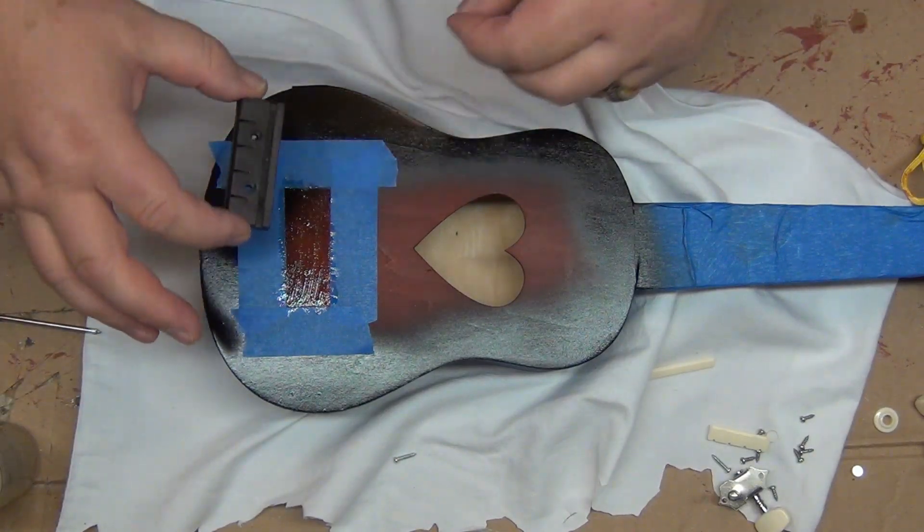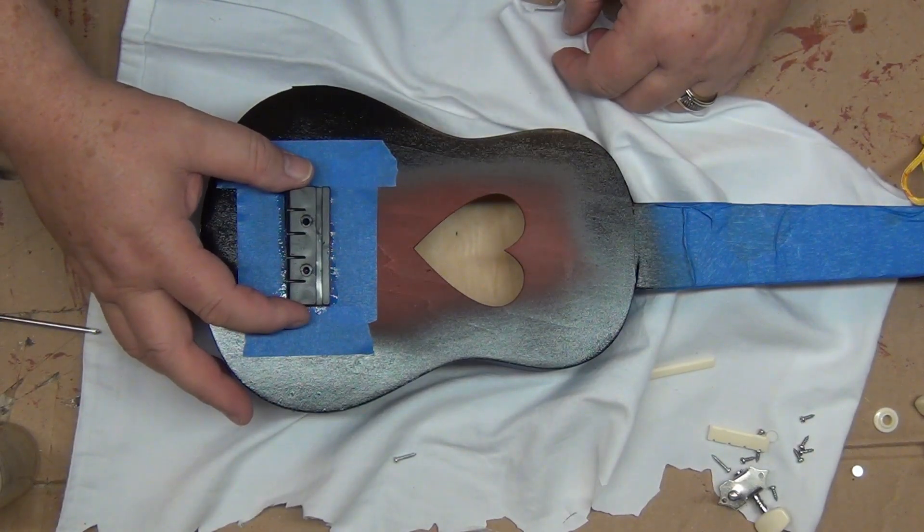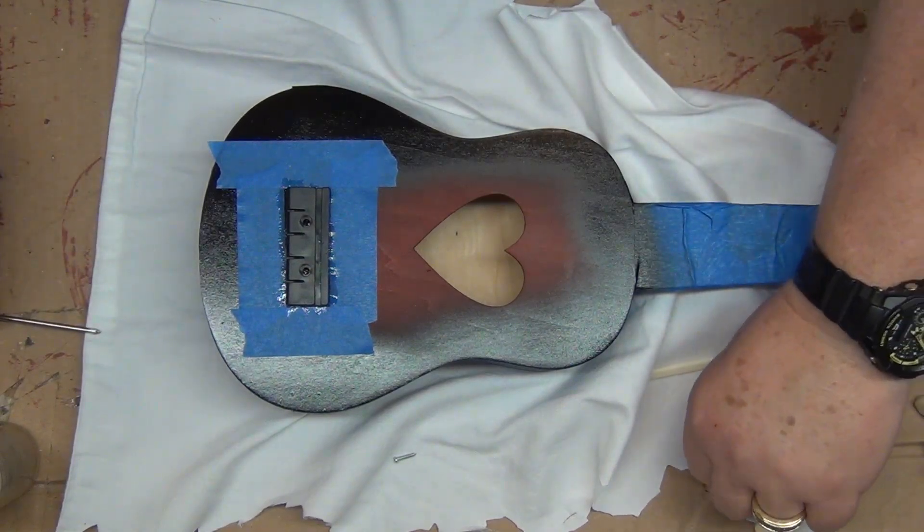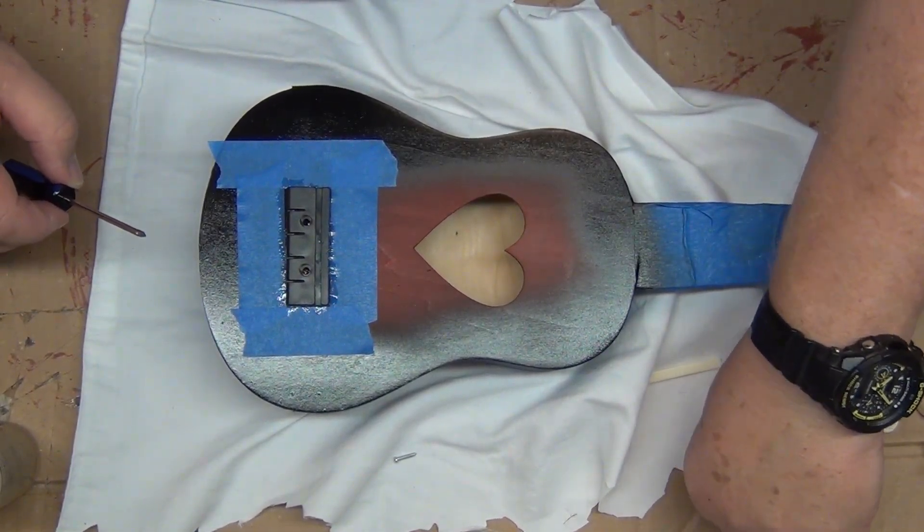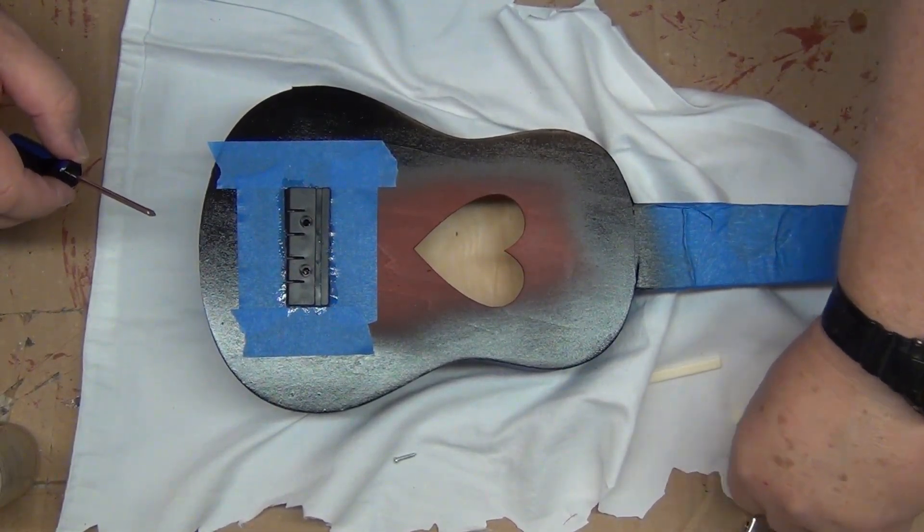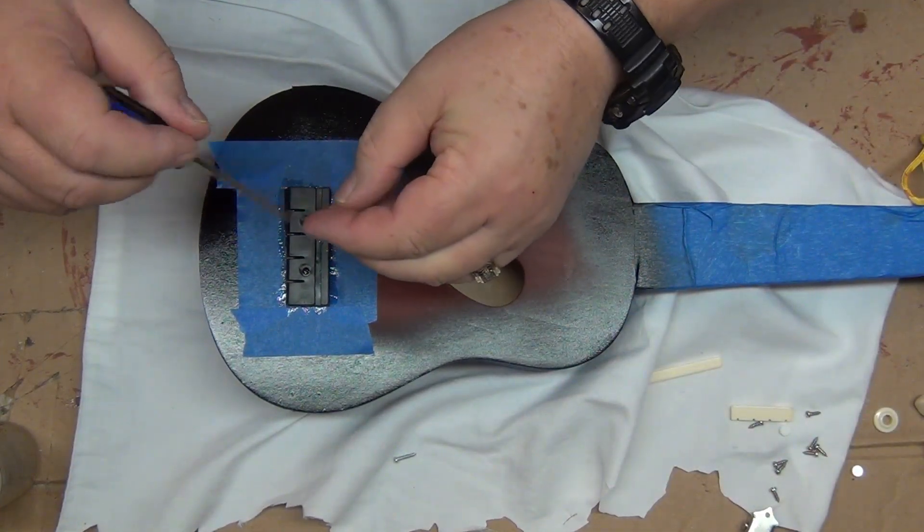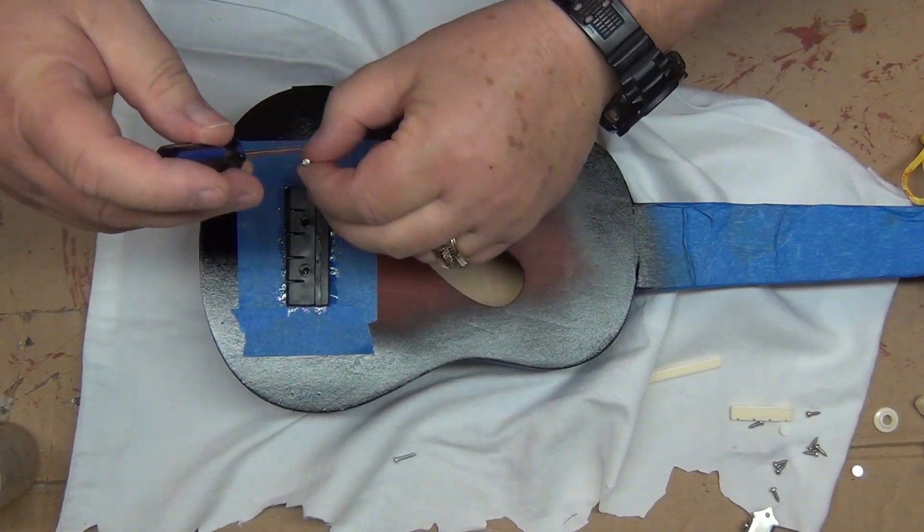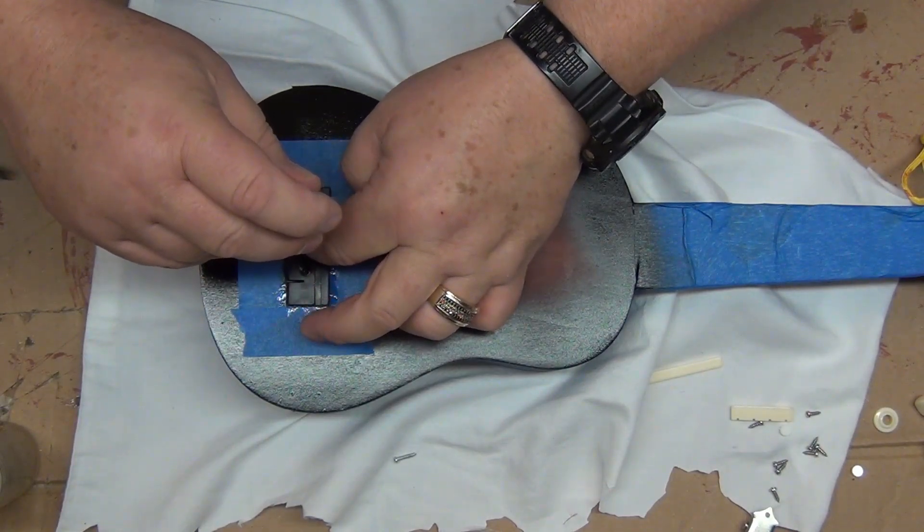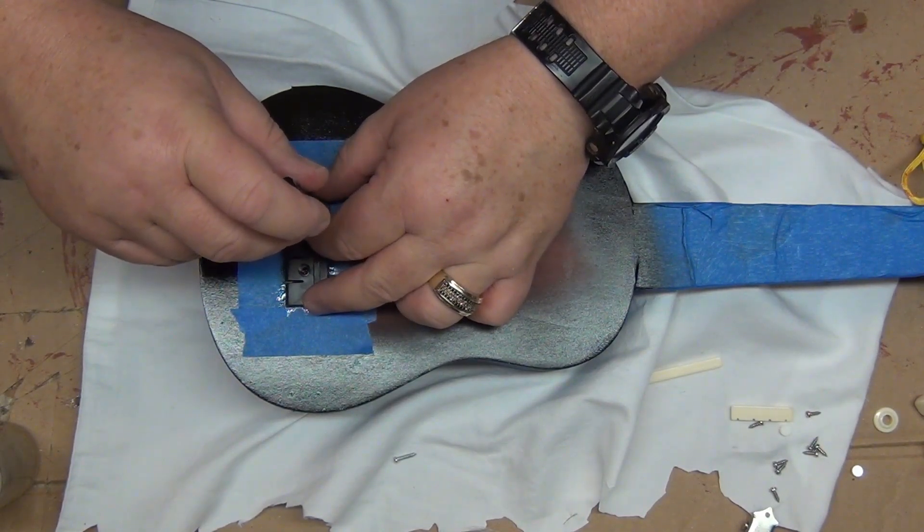After we had a good coating of glue on both pieces, I reseated the bridge and screwed it down permanently.